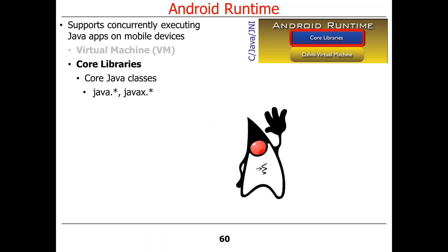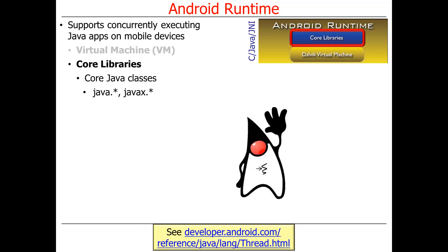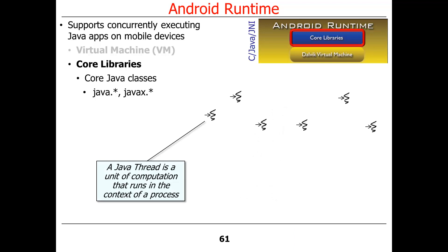Some of the most interesting things that Java provides is its support for multi-threading. One of the really cool things about the way we're doing this class with Java is it makes it possible to cover multi-threading much earlier in the curriculum than we would have done in the past. You probably wouldn't have gotten exposed to multi-threading until the OS course, which comes junior year or later. Java has really nice support for threads and it's easy to learn.